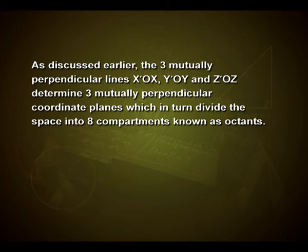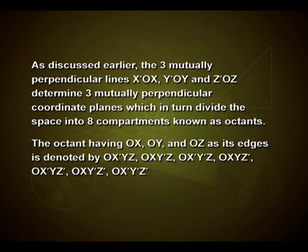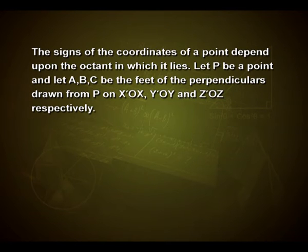As discussed earlier, the three mutually perpendicular lines x'Ox, y'Oy and z'Oz determine three mutually perpendicular coordinate planes, which in turn divide the space into 8 compartments known as octants. The octants having Ox, Ox', Oy and Oz as their edges are denoted by OXYZ, OX'YZ, OXY'Z, OXY'Z', OXYZ', OX'YZ', OXY'Z' and OX'Y'Z'. The signs of the coordinates of a point depend upon the octant in which it lies.